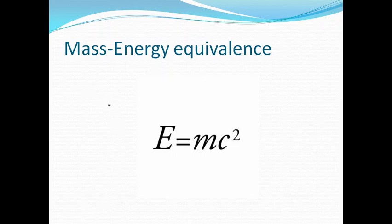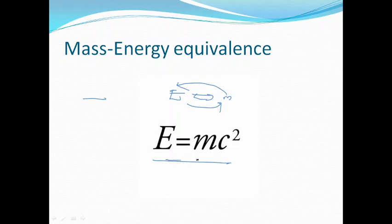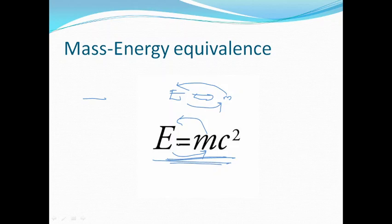We also have mass-energy equivalence, given by the famous equation E = MC². Under this concept, mass and energy are different manifestations of the same thing — energy can be converted to mass and mass can be converted to energy. The traditional concept of mass or energy as separately indestructible is overturned by this principle. E = MC² expresses the equivalence between them.